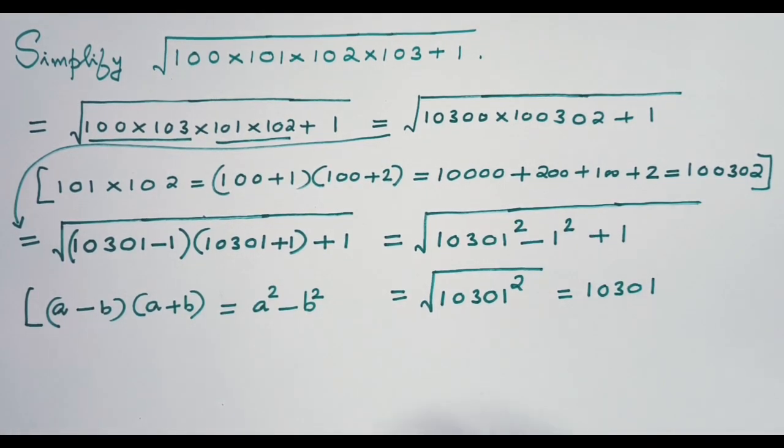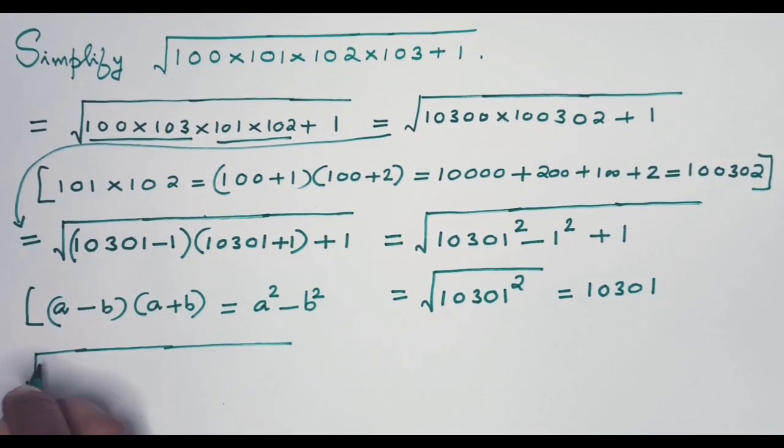So this is the shortest method you might think, but there is something I can show you which is even shorter than this. Yeah, among the different methods I would say this is the shortest. Now there is a shortcut I can share with you. See, this is the numerical expression to be simplified: 100, 101, 102, 103 plus 1.